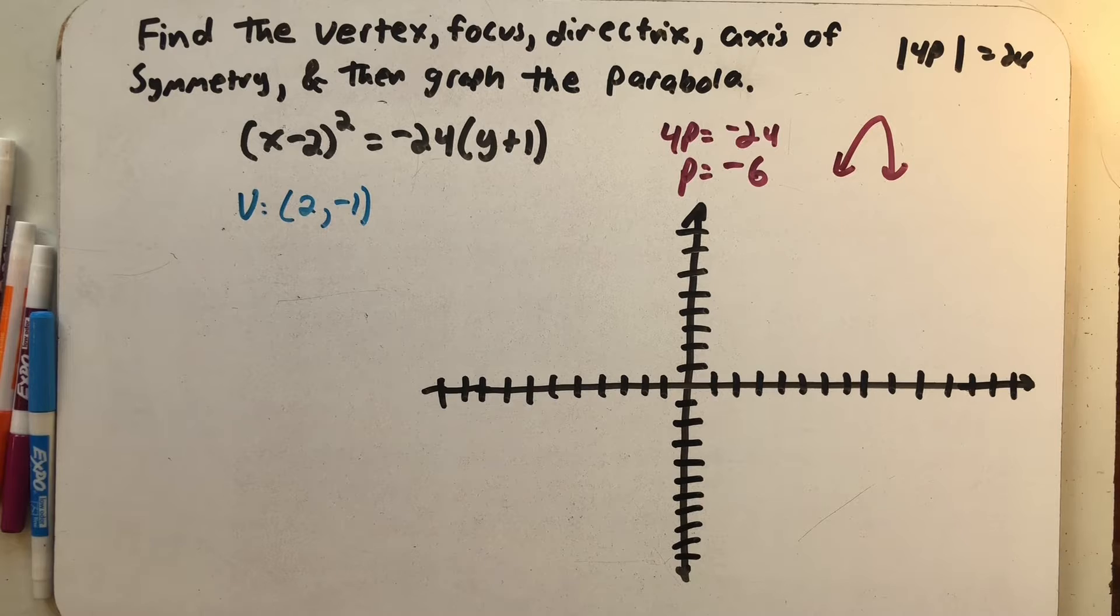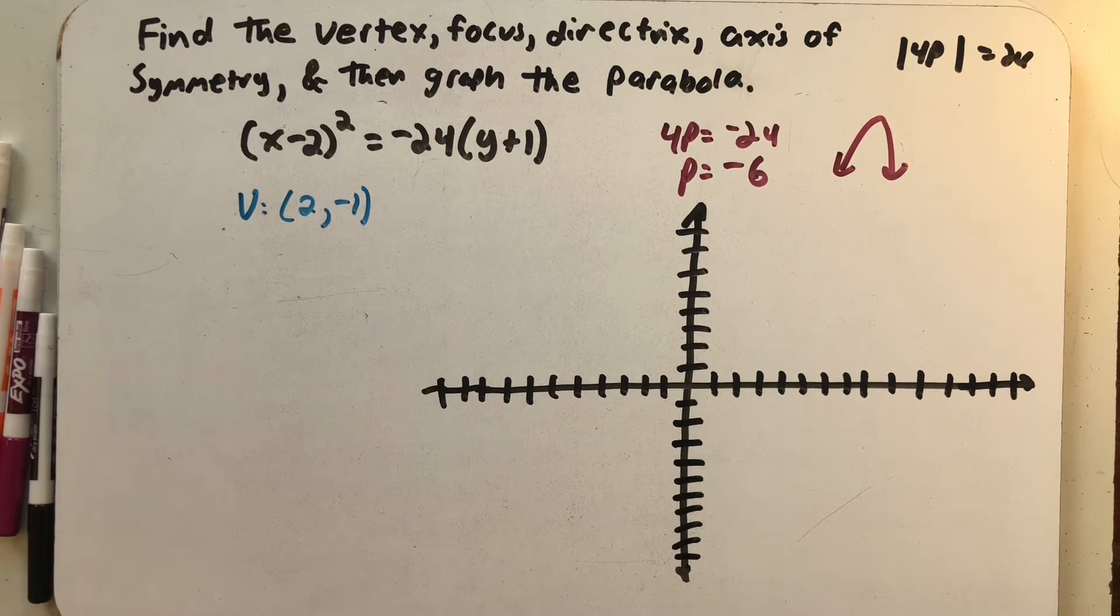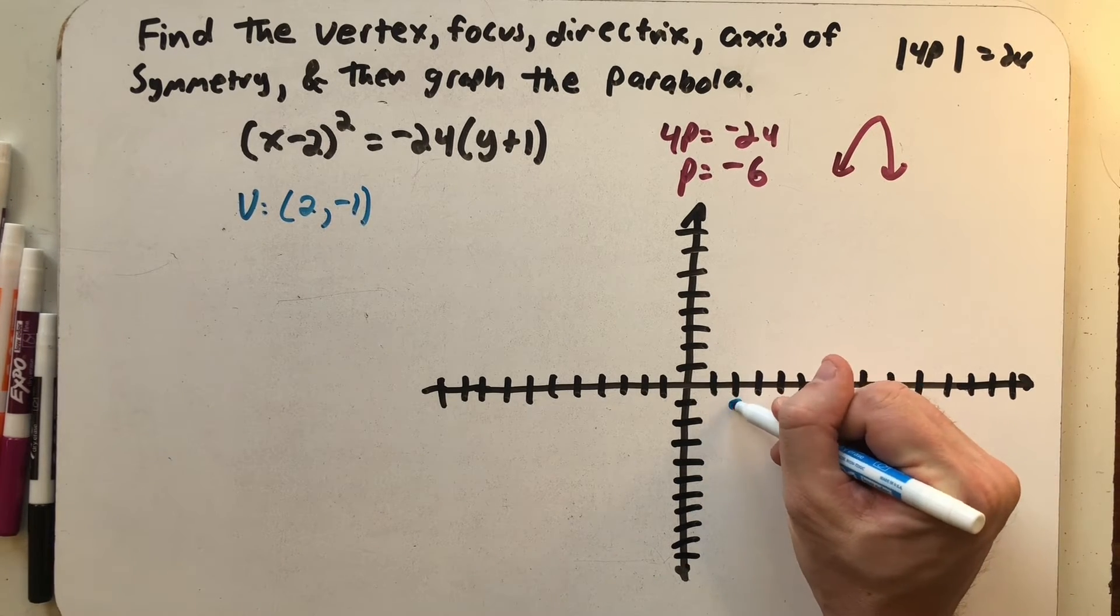Alright, let's go ahead and plot that vertex. (2, -1). Nice happy vertex.